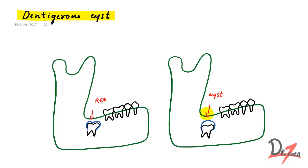Why does the space increase? Some tragedy might have happened. That tragedy is the fluid accumulation between the reduced enamel epithelium and the crown. You can notice here that this blue line is attached to the tooth, and this is the cemento-enamel junction.